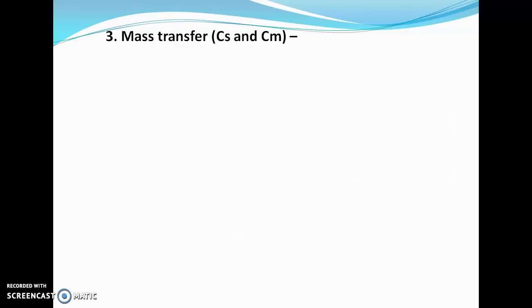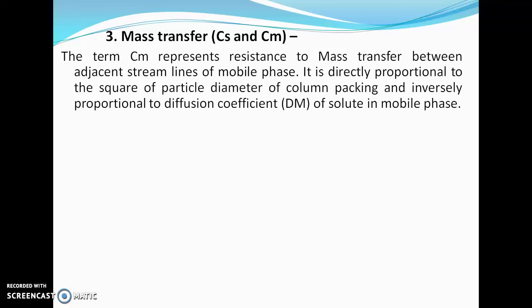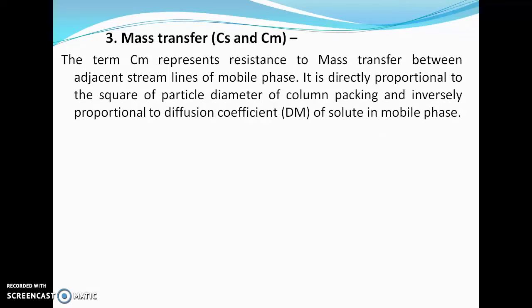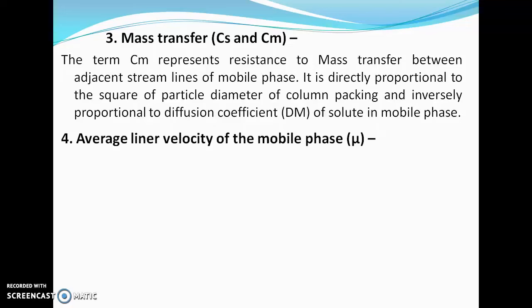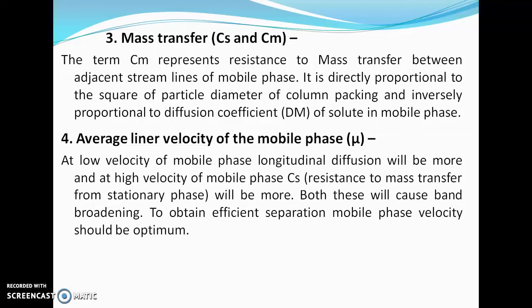The term Cm represents resistance to mass transfer between adjacent streams of mobile phase. It is directly proportional to the square of the particle diameter of the column packing and inversely proportional to the diffusion coefficient of solute in the mobile phase. Both Cs and Cm contribute to HETP. At low mobile phase velocity, longitudinal diffusion is more; at high velocity, Cs (resistance to mass transfer from stationary phase) is more — in both cases band broadening occurs.